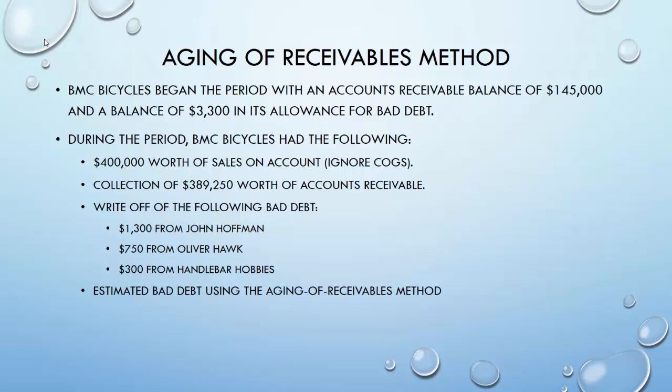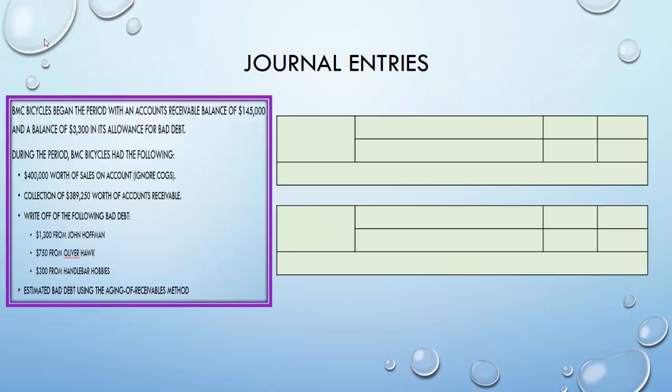We're going to apply the aging method to a company called BMC Bicycles. They begin the period with an AR balance of $145,000 and an Allowance for Bad Debt balance of $3,300. During the period they had $400,000 of sales on account (ignoring COGS), collected $389,250 of receivables, and have three accounts they think are uncollectible: $1,300 from John Hoffman, $750 from Oliver Hawk, and $300 from Handlebar Hobbies. At year-end they'll estimate bad debt expense using the aging of receivables method.